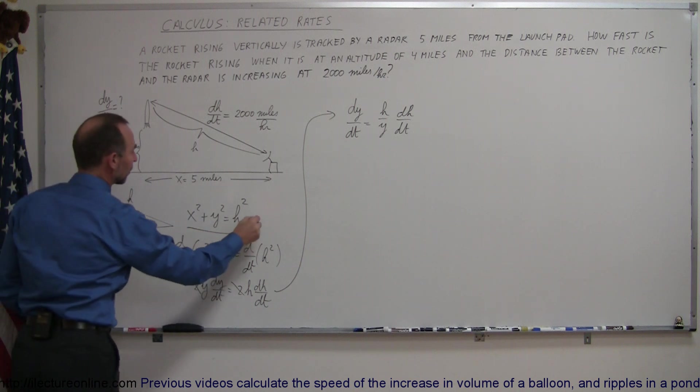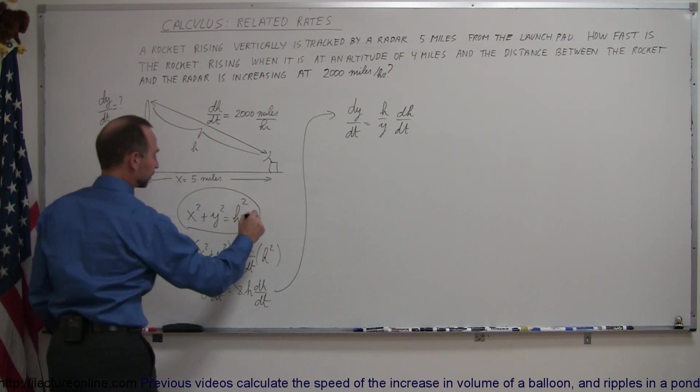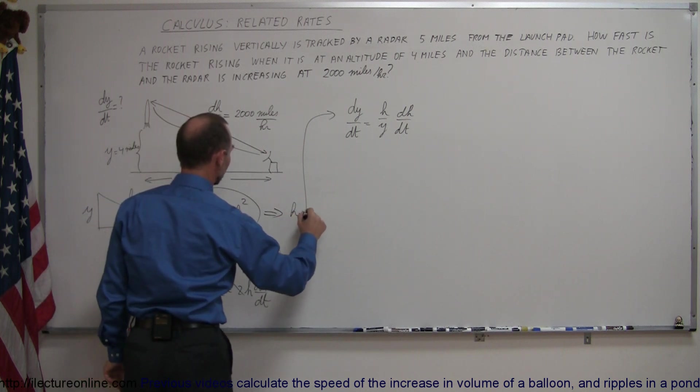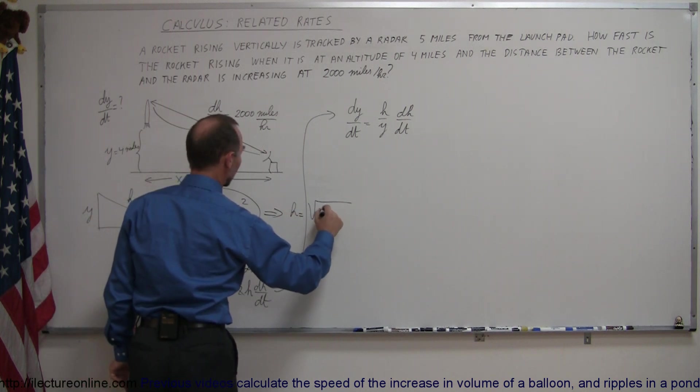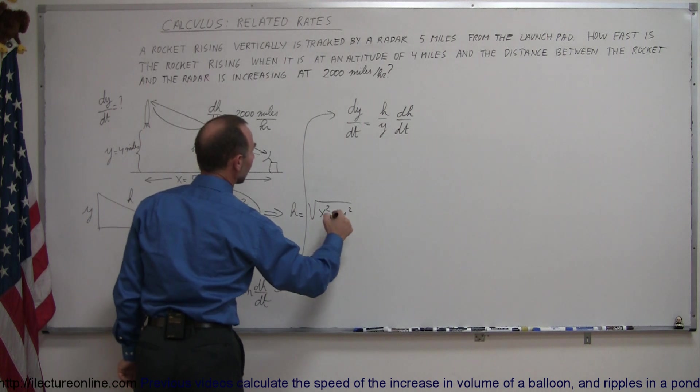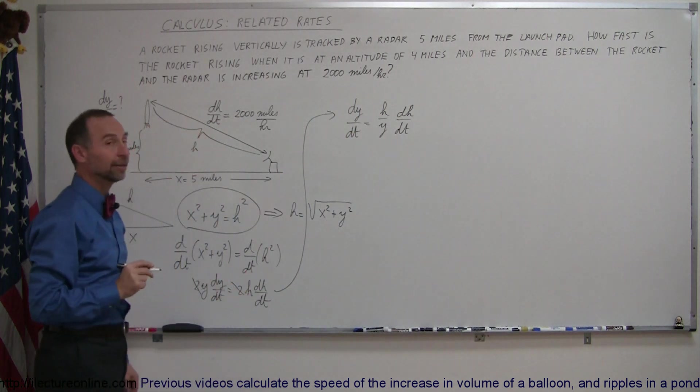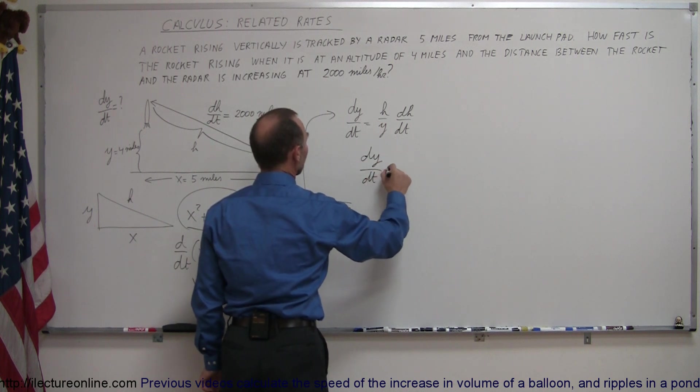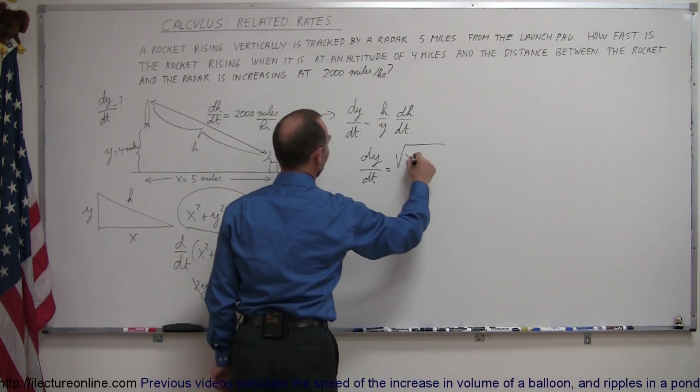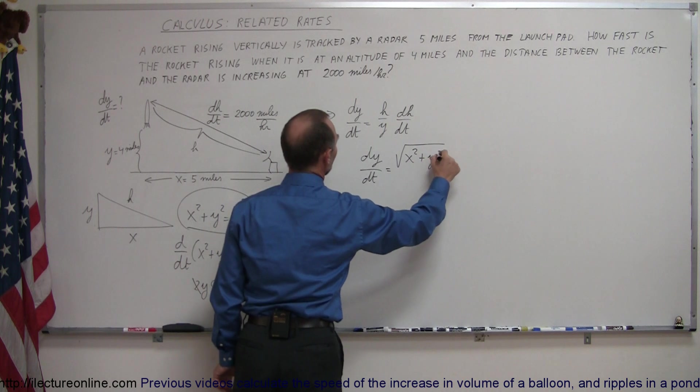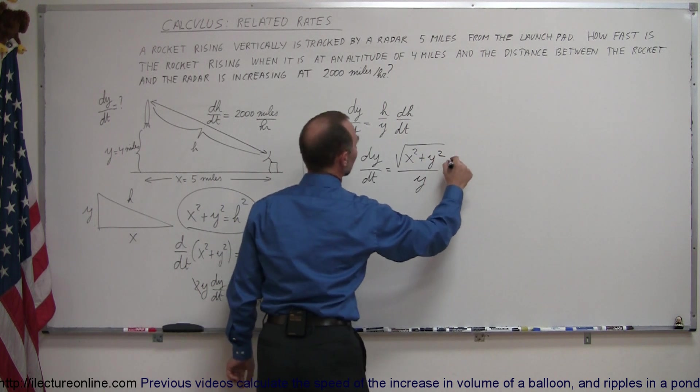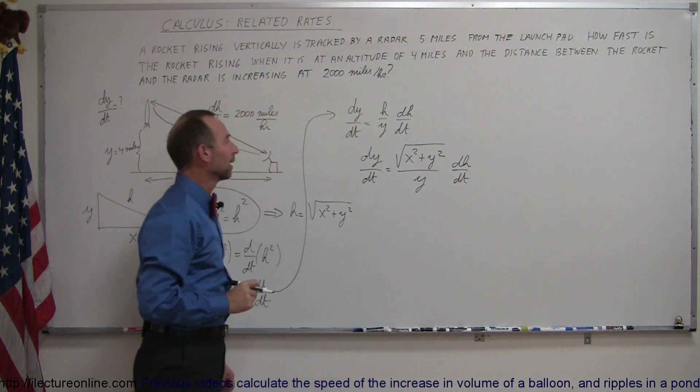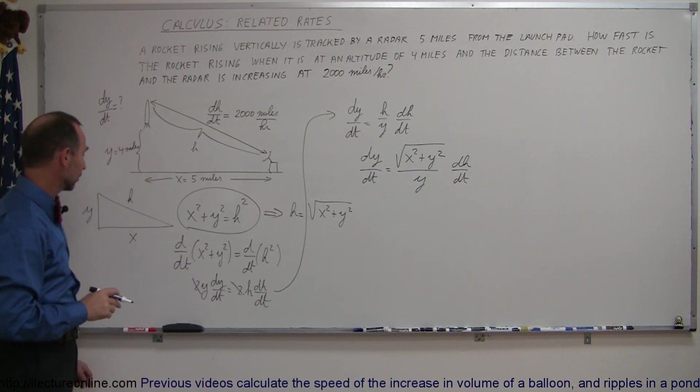Well, we take our equation right here and solve this equation for h. We can say that h is equal to the square root of x squared plus y squared. So we can plug that into our equation right there. And then our equation becomes dy dt is equal to the square root of x squared plus y squared divided by y times dh dt.